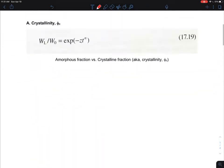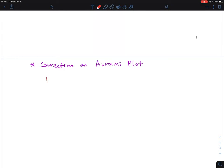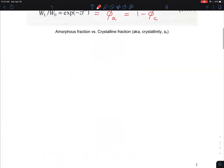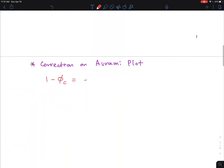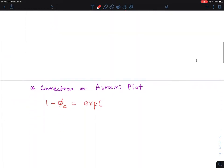If you remember, the equation represents the essential fraction of amorphous, which is the same as 1 minus crystal fraction. If I write 1 minus crystal fraction, it is the same as an exponential: minus z times t to the power n.